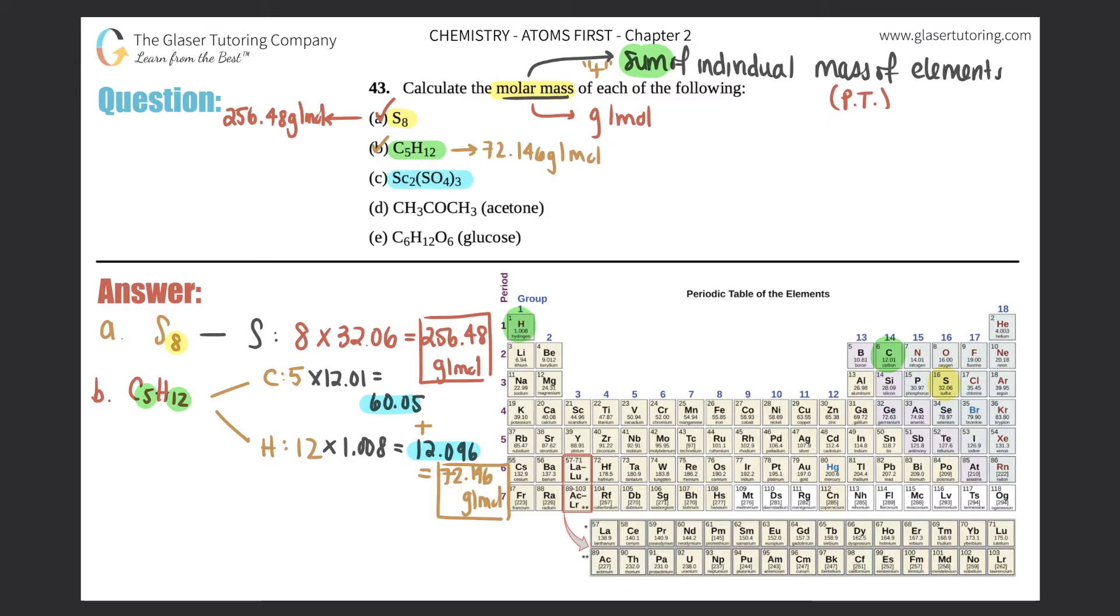Letter c, Sc₂(SO₄)₃. How many different elements do we have here? We have three different elements. We have scandium which is Sc, we have sulfur, and we have oxygen. Now we just got to say how many we have. Just know that this c is not its own element, that's not carbon, because it's a lowercase. All uppercase are new elements, lowercases have to be trailing from a previous element. So Sc is scandium, it's not two different elements. How many scandiums do we have? We have two. How many sulfurs do we have?